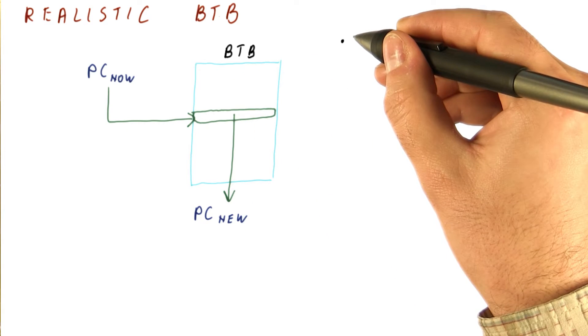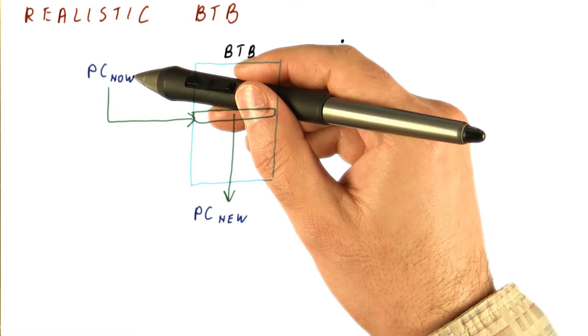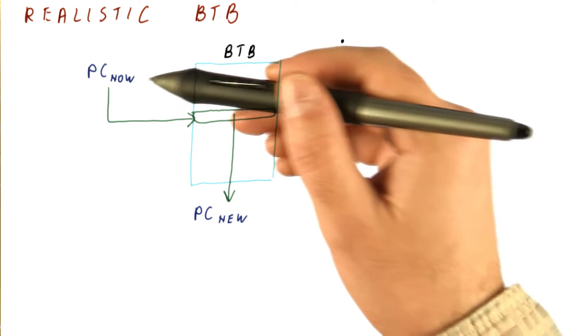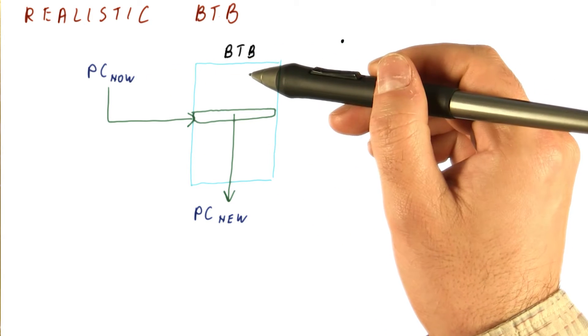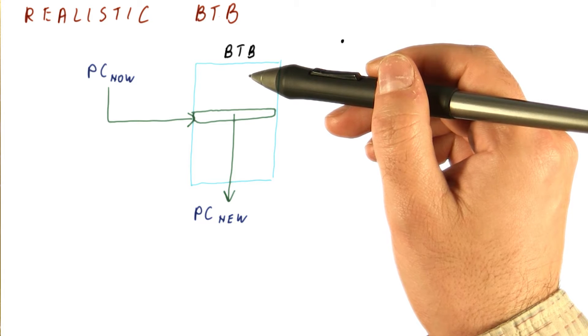First of all, we don't need to have an entry for every possible PC. It's enough if we have enough entries for all the instructions that are likely to execute soon.